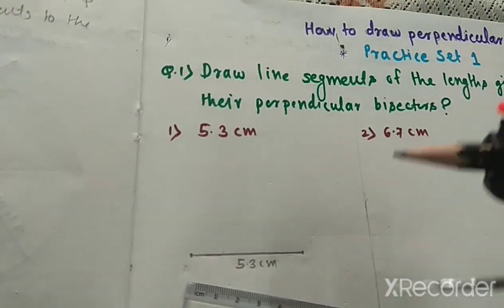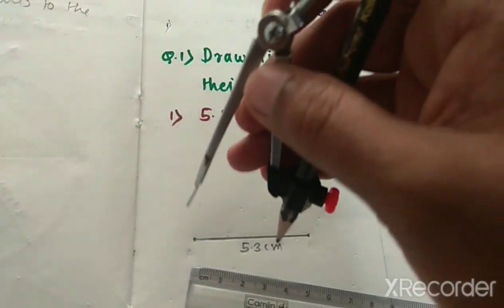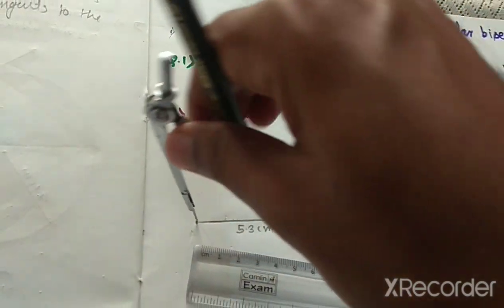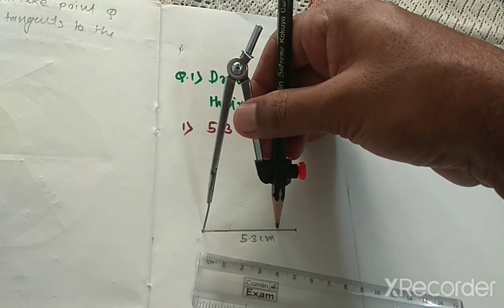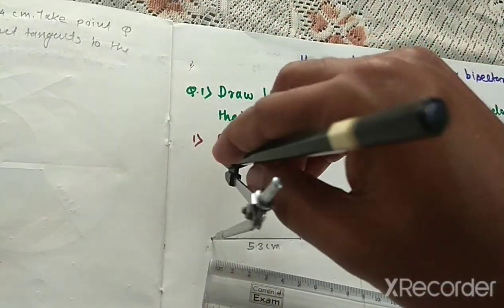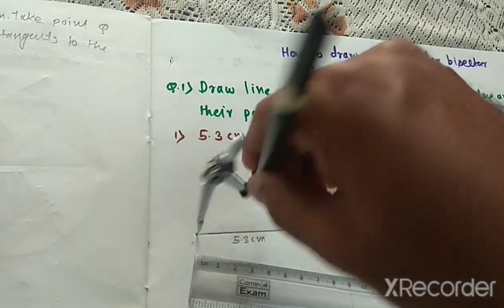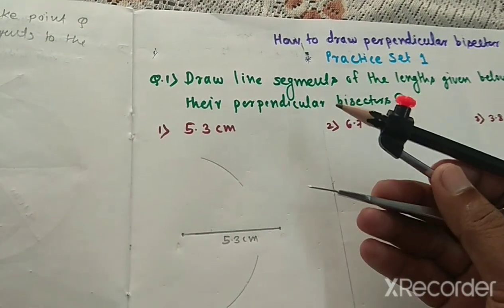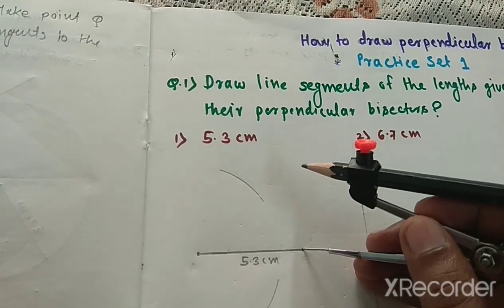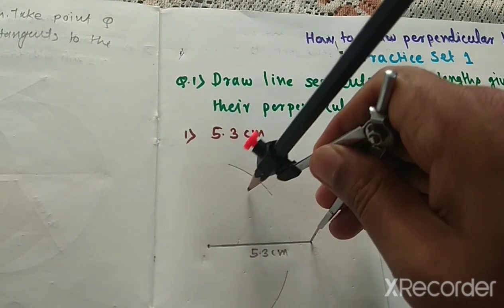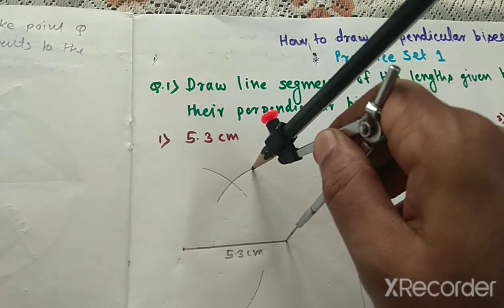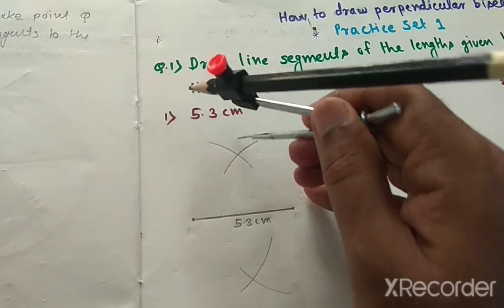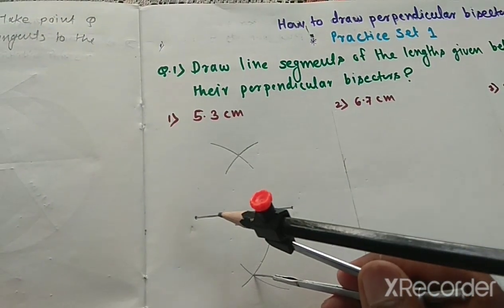Now we have to bisect it. So, keeping the still point of compass on here, take distance more than half, make arc upper side as well as lower side. Now, keeping the still point on second point here, cut the first upper arc and first lower arc. Now join these two arcs.